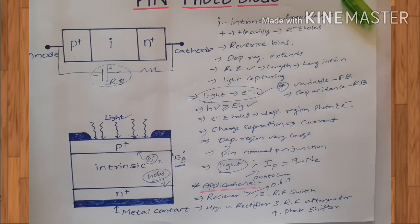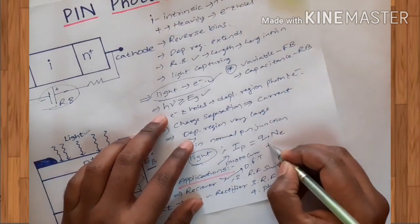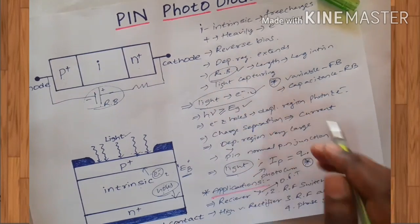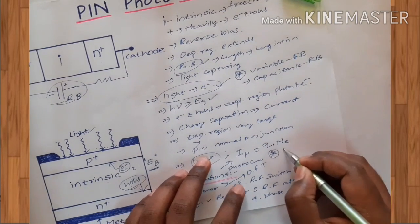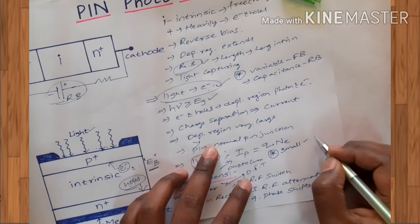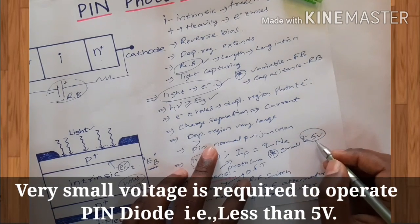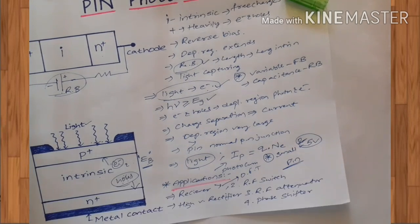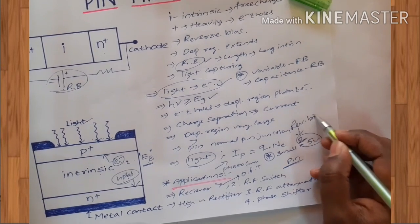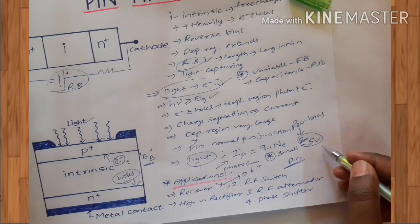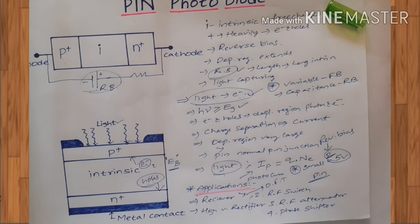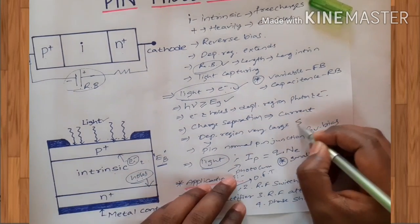One more interesting property of the PIN photodiode is that it works only in reverse bias, and very small values of voltage — in the order of 2–25 volts — are needed to operate it. So very low reverse bias voltage is required. This is all about the PIN photodiode, whose main function is to convert light energy into electrical energy. The PIN photodiode is also used in the field of sensors.